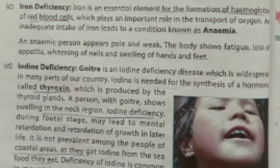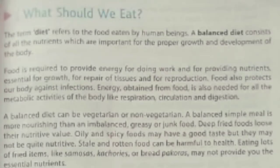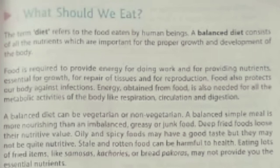What should we eat and what should we not eat? That means, what should our diet be? A diet that contains healthy food is known as a balanced diet. A balanced diet should contain all the nutrients that are important for our growth and development: calcium, phosphorus, carbohydrates, proteins, fat, vitamins, and minerals. These all are important nutrients that should be present in our diet.